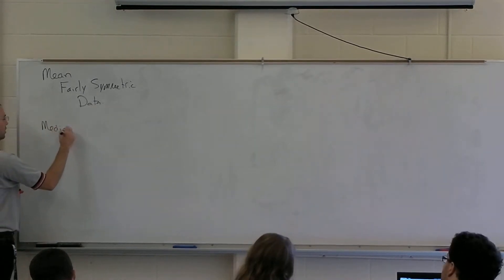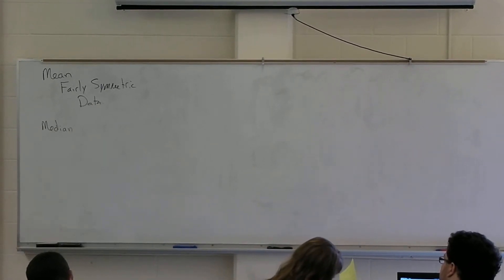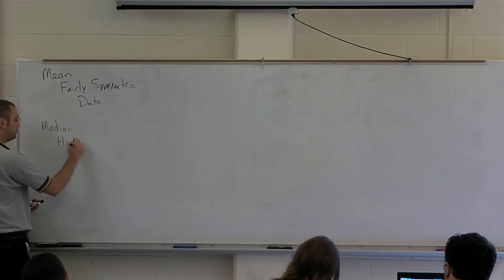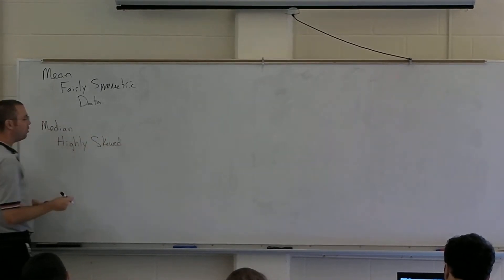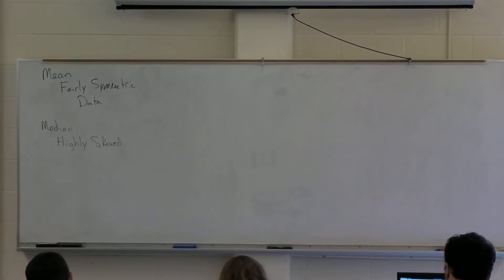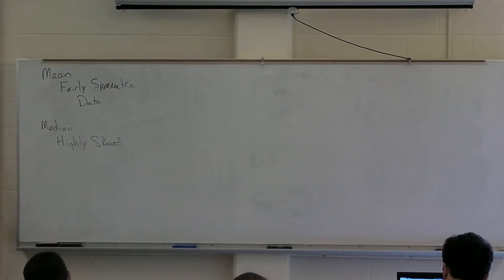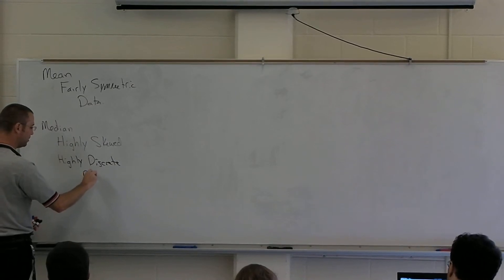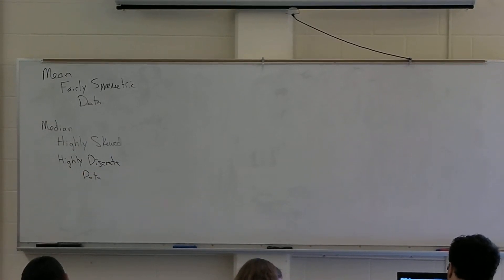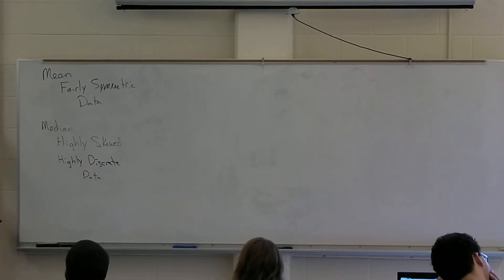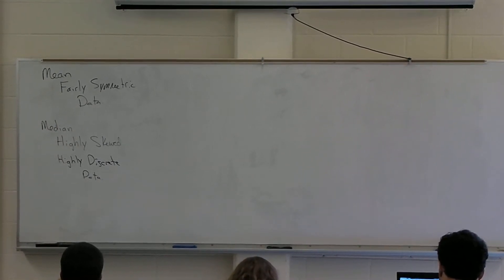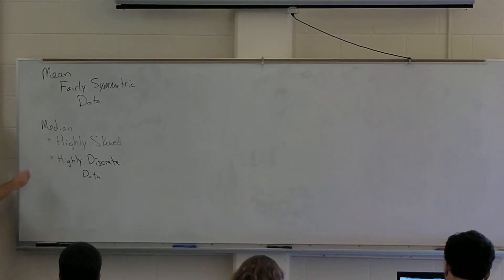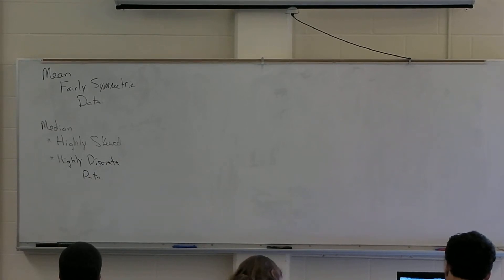Because then you're actually really looking at sort of the typical response you would expect to get when we're dealing with the measure of center there. So typically our mean is used when we have fairly symmetric data. Our median, there are a couple of different indicators of when you would use the median. The median you would use when you have highly skewed data, or when you have data where there's only a couple of response values available and there are very high frequencies of those response variables. That's what's called highly discrete data.